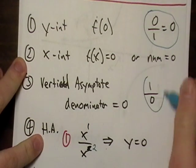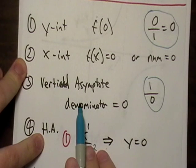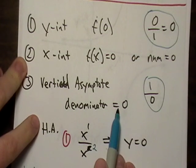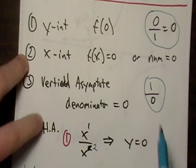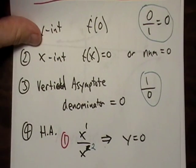Vertical asymptote, we're looking for this scenario right here, this divide by zero stuff. So, we just set the denominator equal to zero, and then we solve for x, and we'll basically have a divide by zero situation.